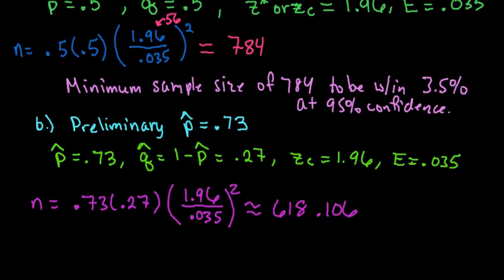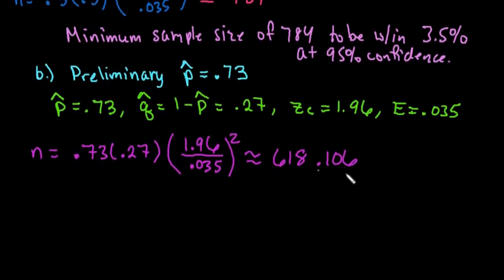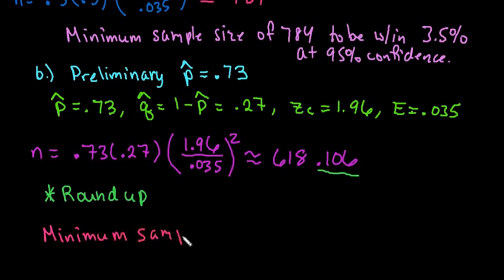I can't ask 0.106 of a person. With this, regardless of the decimal, if you have a decimal, you always round up. Because since you need part of 618 plus a little bit more, because you're pulling an actual person, you would always round up regardless of the value. So the minimum sample for a preliminary estimate where p hat is 0.73 is 619 people.